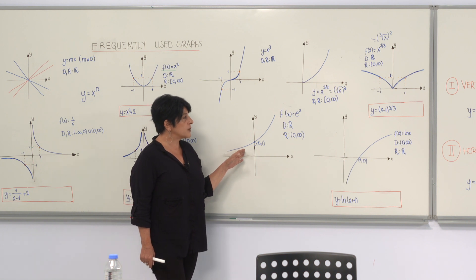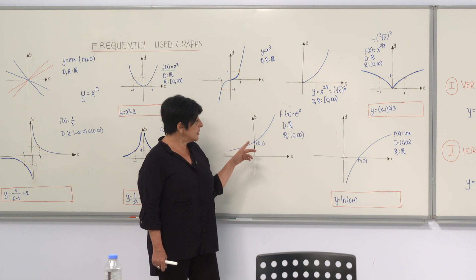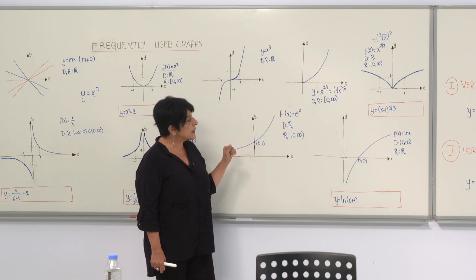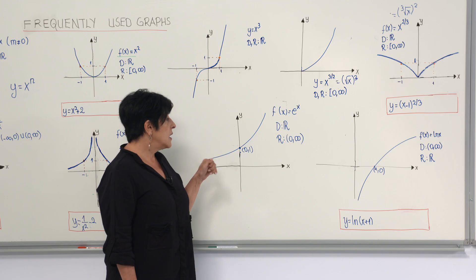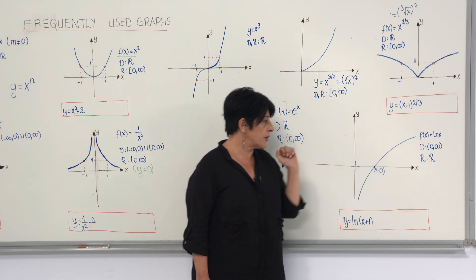These two graphs are the graphs of natural exponential function and natural logarithmic function. Actually, they are the inverse pair. That's why the graphs are symmetrical with respect to the line y equals x, and the domain of one becomes the range of the other.